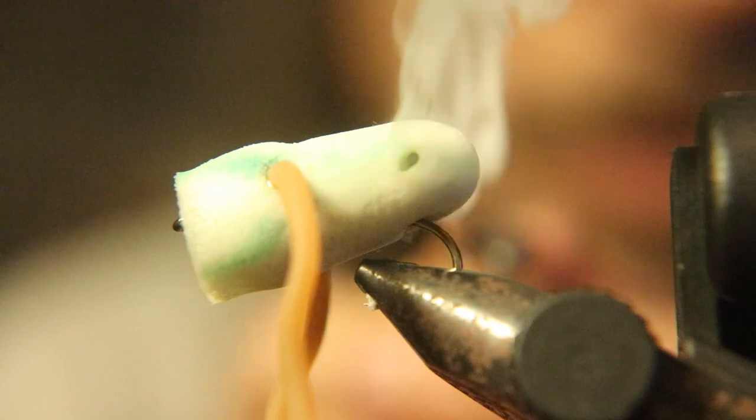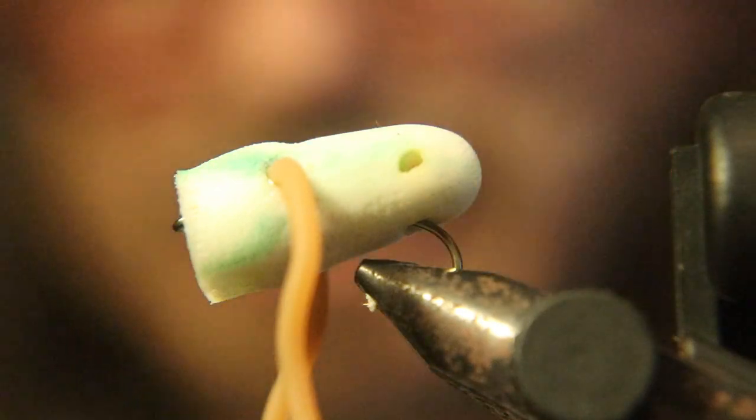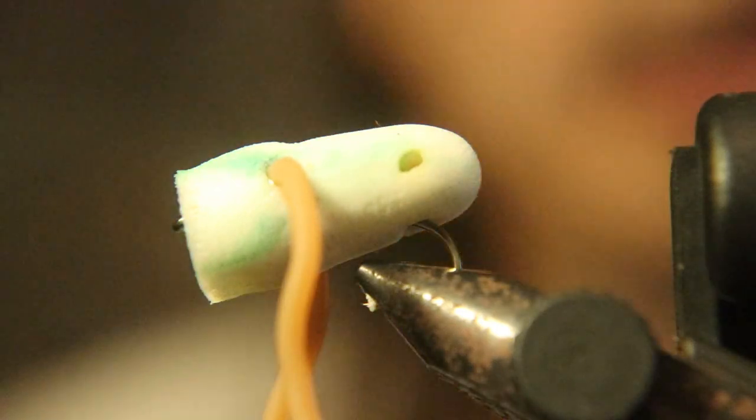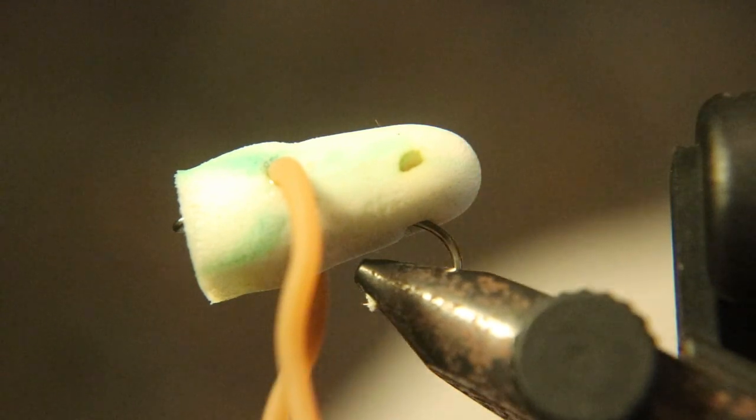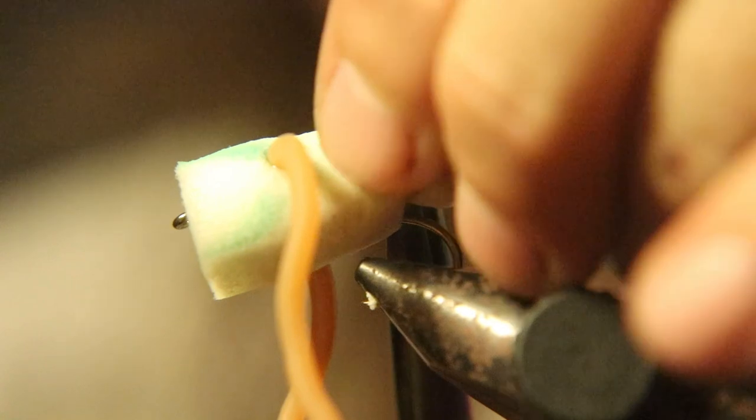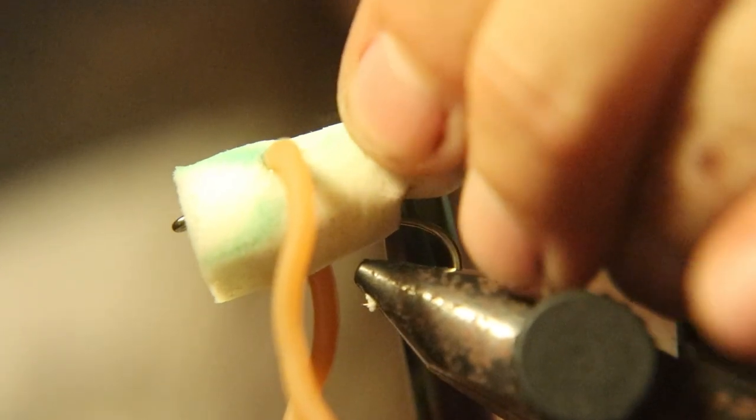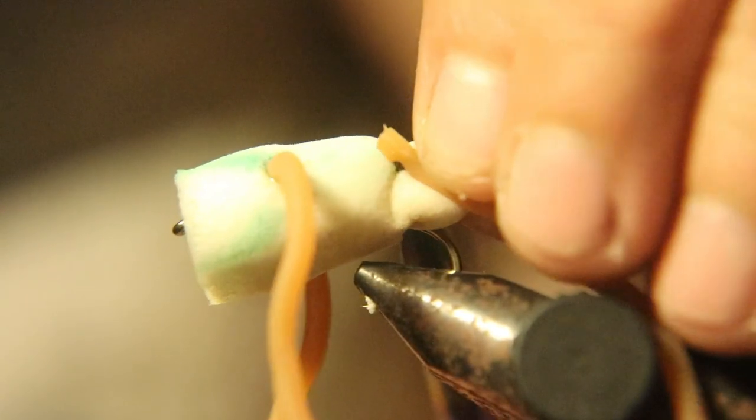Now you're gonna do the same thing, as far back as you can, almost to the back end of this earplug, gonna burn another hole. Put your forceps through there again, through the hole, pull the rubber legs through.